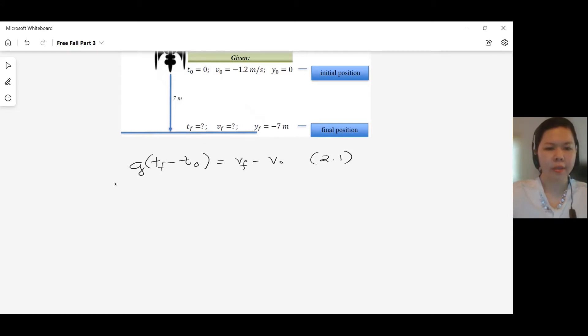For the second, 2G times YF minus Y0 equals VF squared minus V0 squared. This is our equation 2.2. And for the third, YF minus Y0 is equal to V0 open parenthesis Tf minus T0 plus 1.2 G times Tf minus T0 squared. This is our third freefall equation.